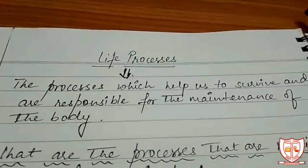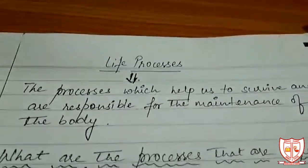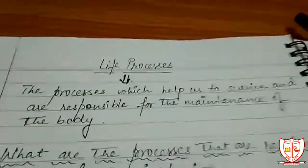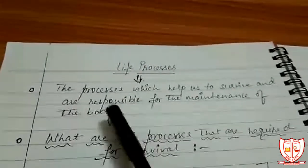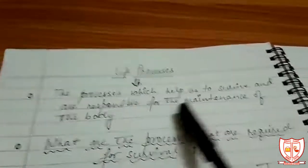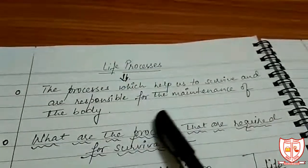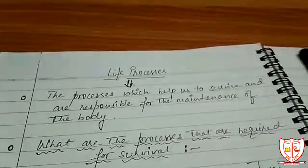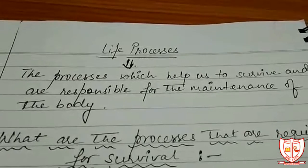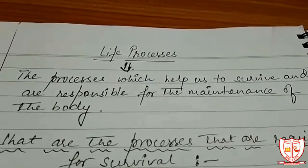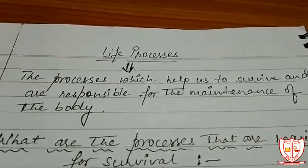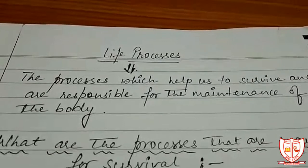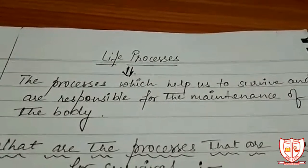Before getting into the details of this chapter, we must know what life processes are. As you can see written here, the processes which help us to survive and are responsible for the maintenance of the body are known as life processes. So we can conclude that the processes which maintain our body, or without which our body cannot survive, are known as life processes.